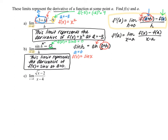Part c asks for the limit as x approaches 4 of the square root of x minus 2, divided by x minus 4. Notice we're not computing the limit as h approaches 0 — this time we're computing the limit as x approaches 4. That indicates we're using the second limit definition of the derivative, the limit as x approaches a. I find this one even easier: a will be the value that x is approaching, so a may be 4. And the function is right in the numerator — the square root of x.